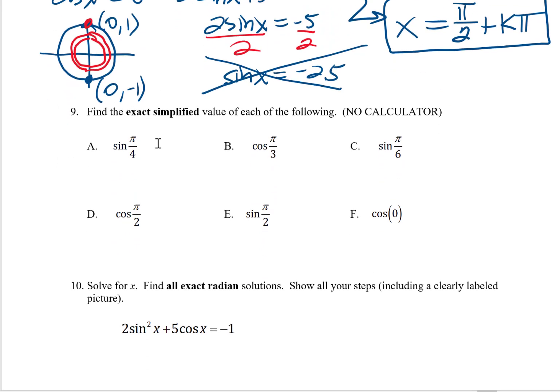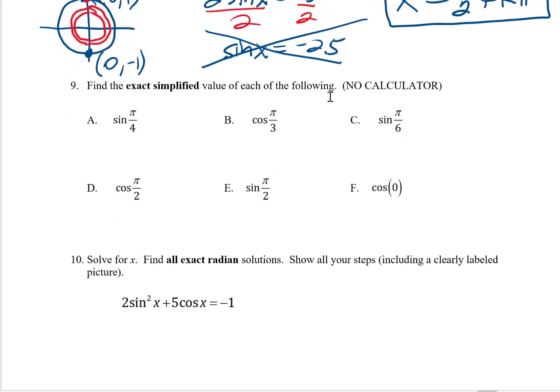Problem number 9, just some quick values, hopefully from memory. Sine pi over 4, that's an easy one, that's root 2 over 2. Obviously, you can always draw the picture real quick, right? It's the 45, 45, 90 situation there.